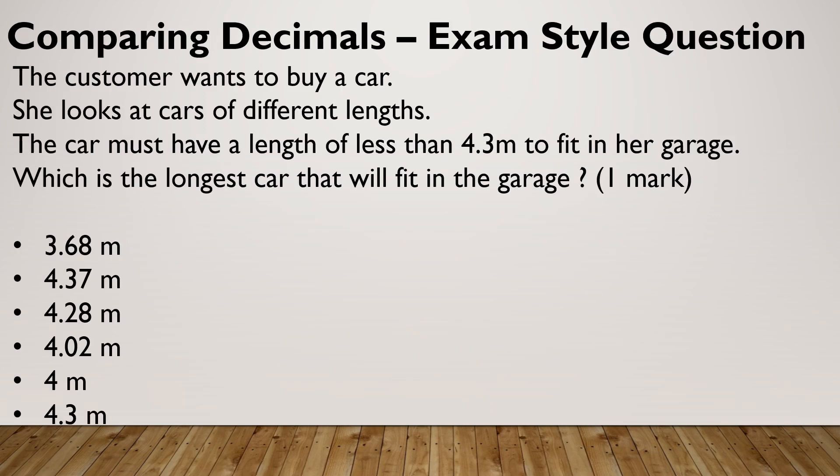Let's look at another example. The customer wants to buy a car. She looks at cars of different lengths. The car must have a length of less than 4.3 metres to fit in her garage. Which is the longest car that will fit? Pause and give it a go. Hopefully you got 4.28. There's a few things going on in this question. The car must have a length of less than 4.3 metres. So I know that 4.3 is the same as saying 4.30. So anything bigger than 4.30, such as 4.7 and 5 itself, is not less than 4.3. I know that those two are too big. So I need the biggest one that is not one of those two. So 4.28 is the biggest of my remaining.